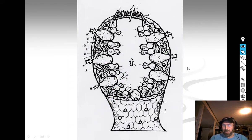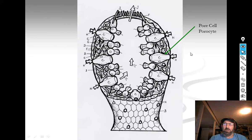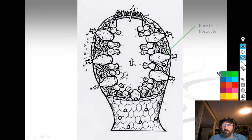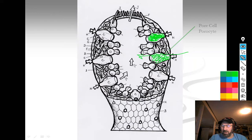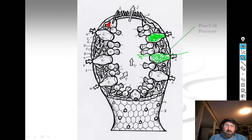Porocytes, letter C, are the cells that have holes in them that water flows through. The spicules line the big opening at the top, and the collar cells — which I'm coloring blue — are all throughout the sponge.